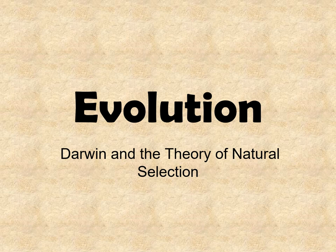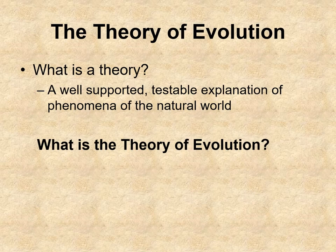Hello, with this video lesson, we're just going to look a little bit at Darwin and his ideas behind his theories of natural selection. Keep in mind, when we talk about a theory, a theory is a well-supported, testable explanation of phenomena in the natural world. Basically, it's a hypothesis that's been tested over and over again, and you kind of keep getting the same answer. And the theory of evolution is this idea behind natural selection.